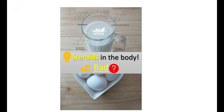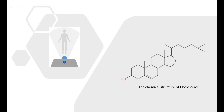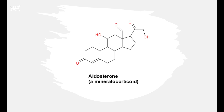Firstly, steroids are essential components of cell membranes, which alter and control the fluidity of membranes. Secondly, steroids are signaling substances to target organs to perform their functions. All steroids are manufactured in the cells of our bodies.